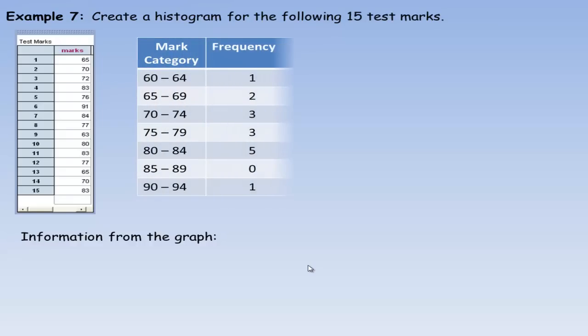In example seven, we're asked to create a histogram for the following 15 test marks. The test marks are 65, 70, 72, etc. We could make a frequency table. The lowest mark here is in the 60s, so we could make the bin width five marks from 60 to 64. That's actually five numbers, even though 64 minus 60 is 4. It includes 60, 61, 62, 63, and 64. So there's actually five numbers in that category. Then 65 to 69, 70 to 74. I've got seven categories, somewhere around five vertical bars.